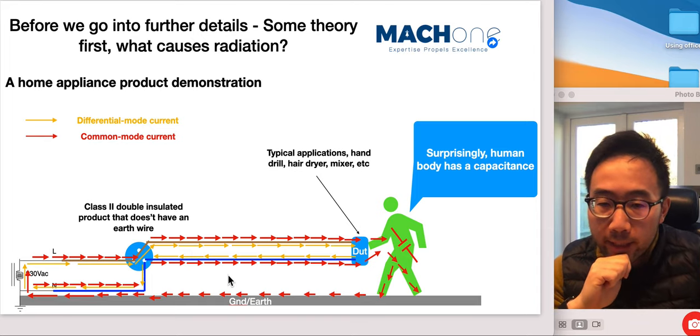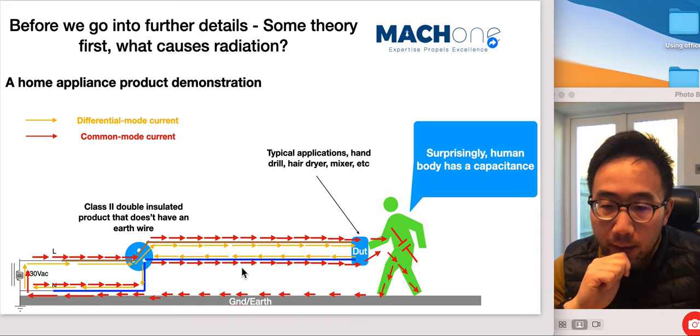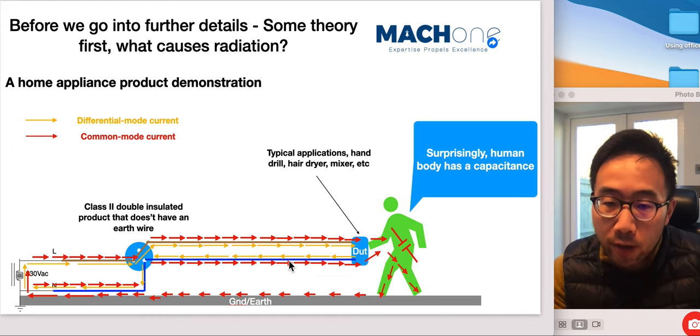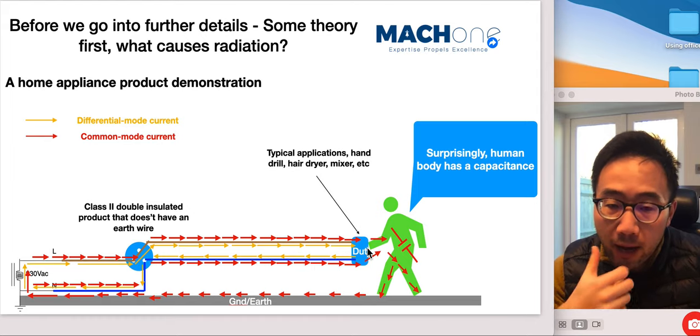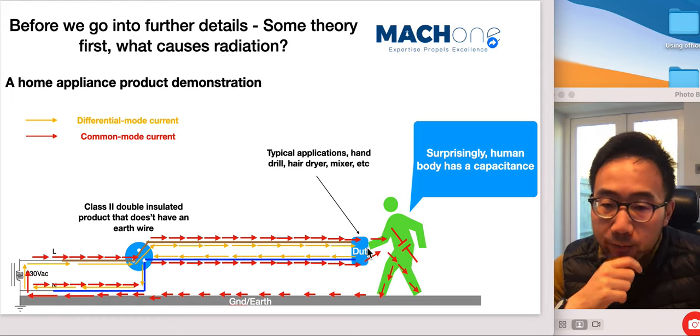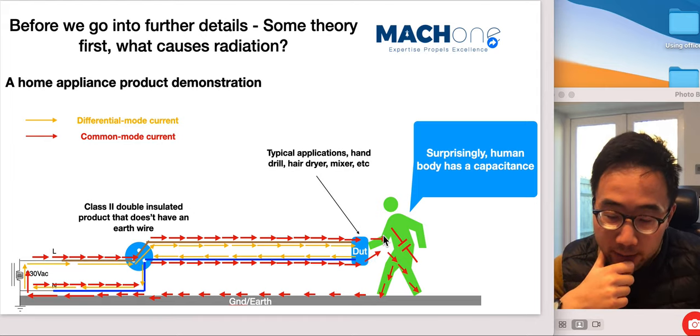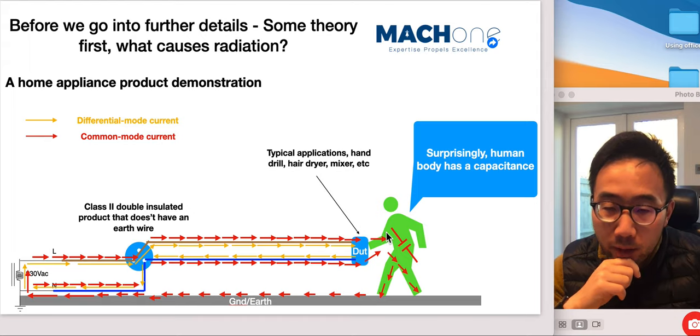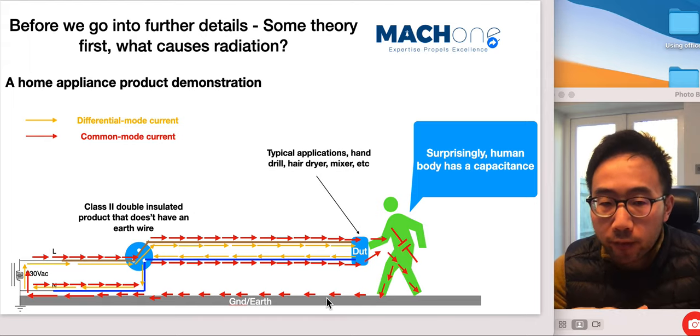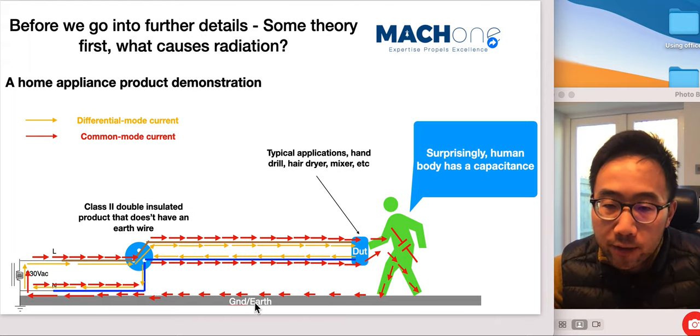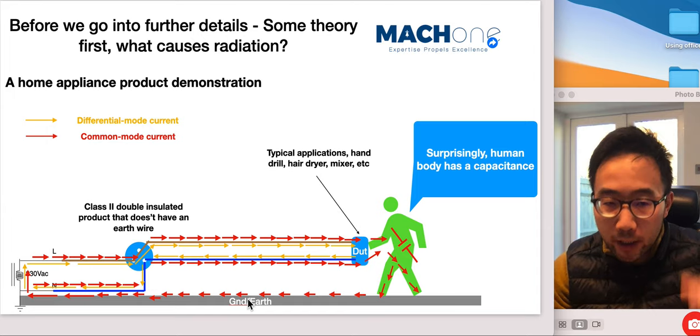Even we demonstrated here that in this case, the common mode currents actually travel on both lines of a product, say this is the live and this is the neutral and this is a handheld device. This could be a hairdryer, could be a hand drill and things like that. And in this case, in this particular case, the common mode current travels using human body as a parasitic capacitance and then part of the return path for this energy is the ground or earth, let's say, where we stand.